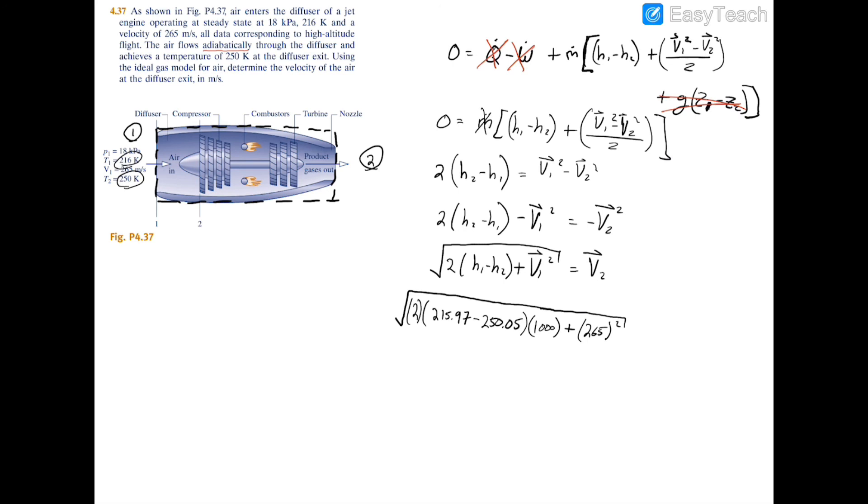All this equals our velocity two. So if you plug this into your calculator, you'll have that the v2 exit velocity equals 45.44 meters per second. It makes sense that the velocity decreased because remember that diffusers are kinetic energy extracting devices. In other words, when you have a high velocity flowing into a diffuser, you should always have a lower velocity exiting the diffuser.